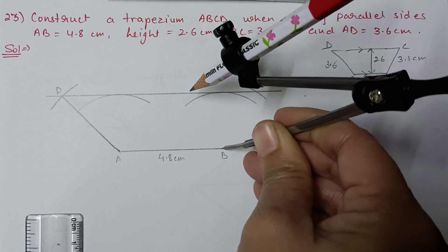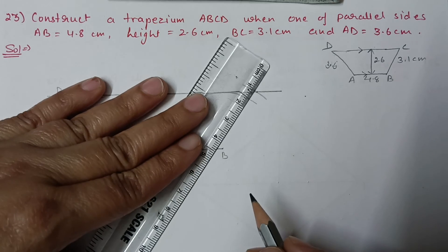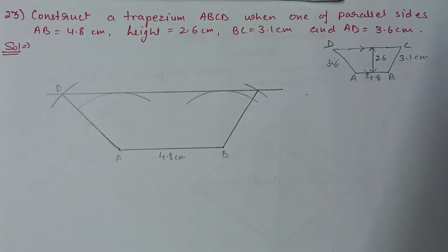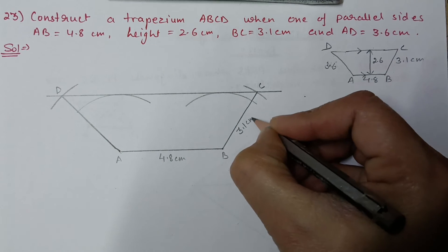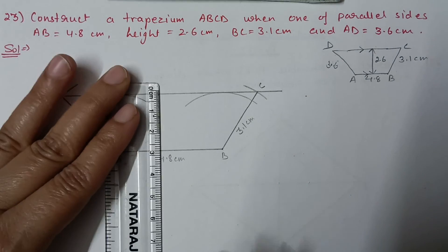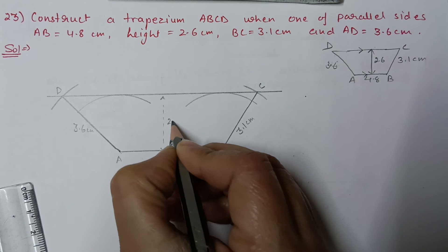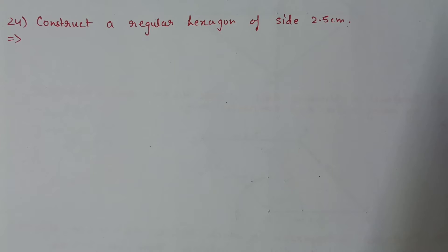Join all points and write the measurements: BC is 3.1 centimeter, AD is 3.6 centimeter, and the perpendicular distance between the parallel lines is 2.6 centimeter. Our trapezium figure is complete. Next, question 24: construct a regular hexagon of side 2.5 centimeter.